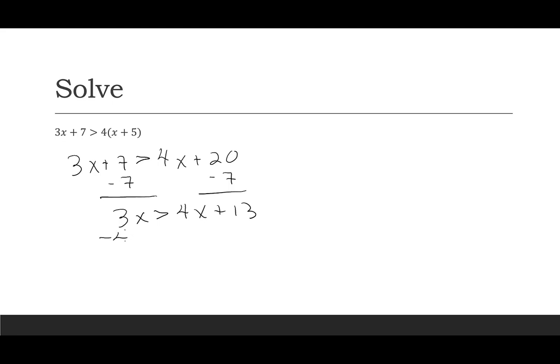Then I'm going to subtract 4x. 3x minus 4x is negative x, and that's greater than 13. I put this one in here to show you that even if I have negative x, I want to think of that as negative 1x.